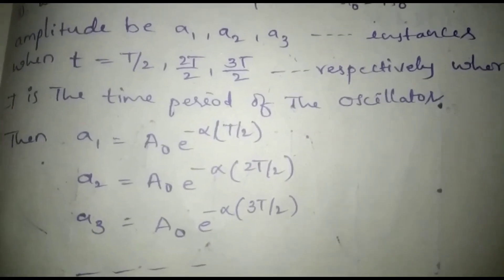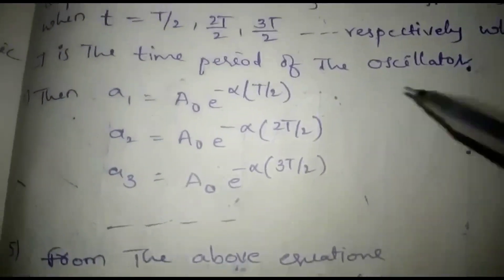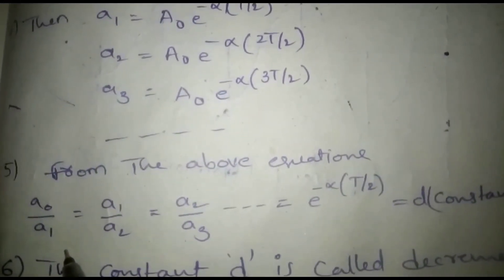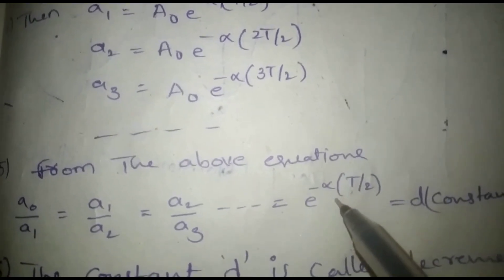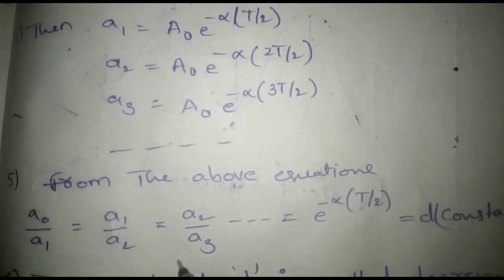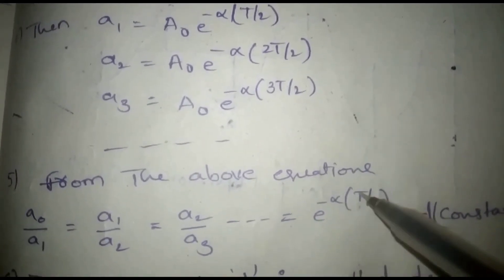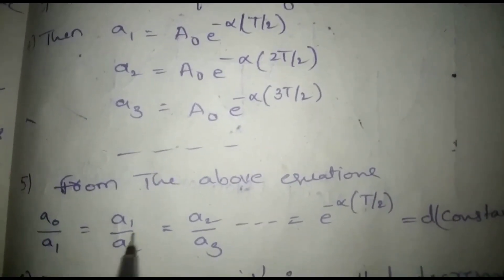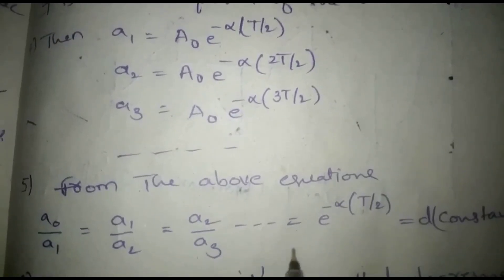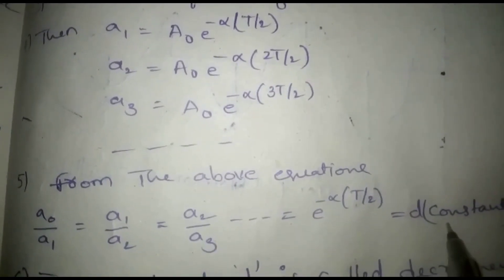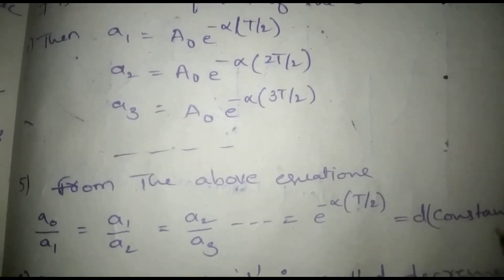From the above equations, we know the ratio of two successive amplitudes. The ratio of two successive amplitudes is e^(−αT/2). So we have A₀/A₁ = A₁/A₂ = A₂/A₃ = e^(−αT/2), and we denote this constant ratio as d.